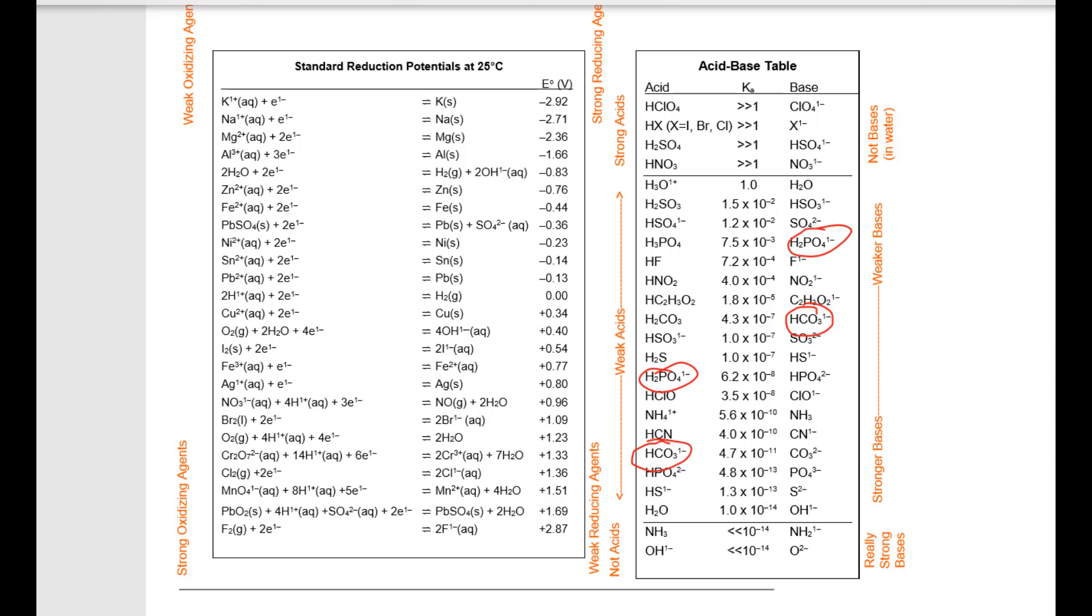I always think of a horse that has blinders on. Put on your right eye blinder. Take the Ka values where they are found next to the material when it is on the acid side of the list. So my values are 4.7 times 10 to the minus 11 and 6.2 times 10 to the minus 8.